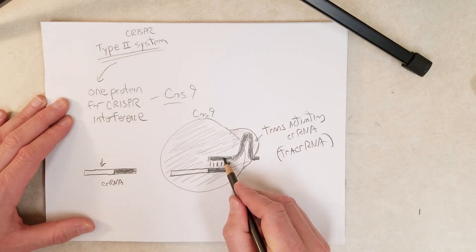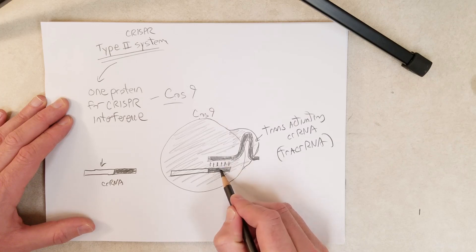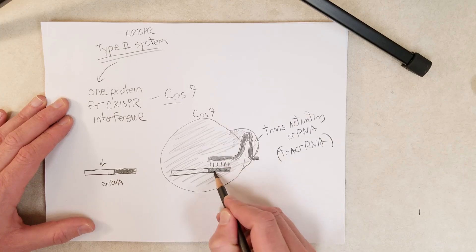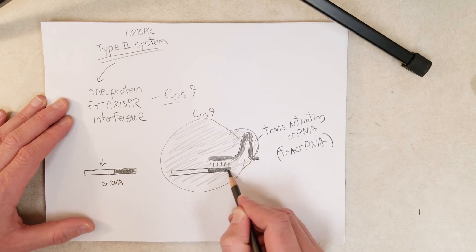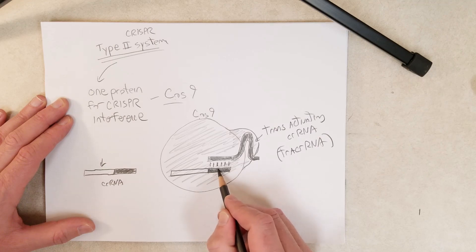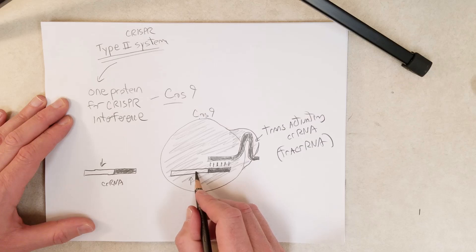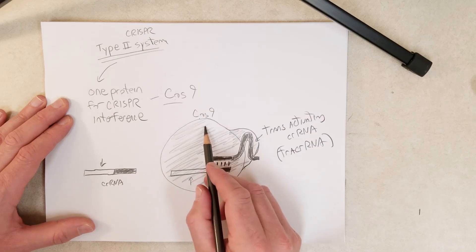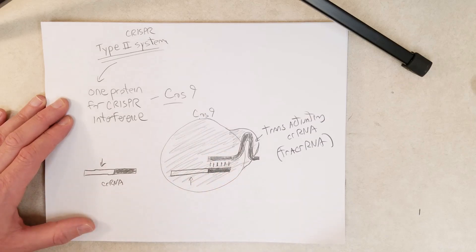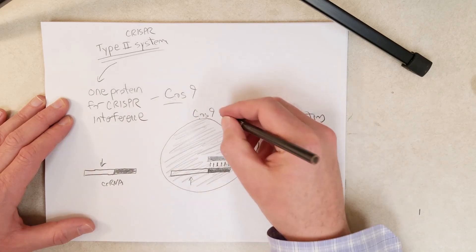So we have interaction between the tracrRNA and Cas9, and interaction between the tracrRNA and the repeat region of the CRISPR RNA. Then we have the spacer sequence which is used by Cas9 to look for viral DNA in the bacterial cell. This is a three-component system involved in the CRISPR interference step.